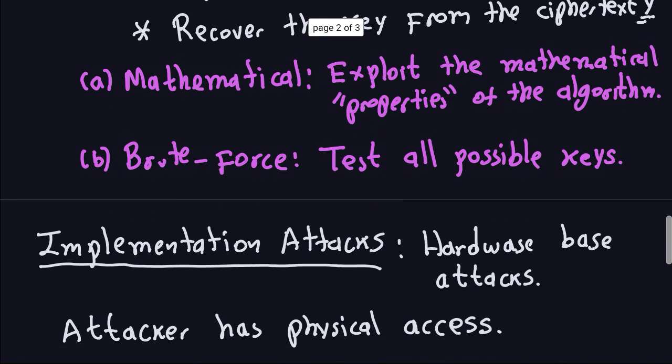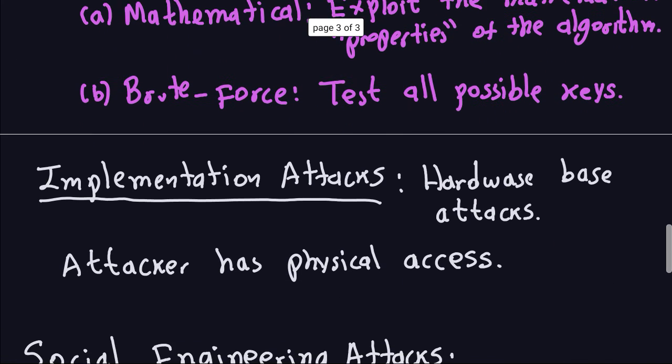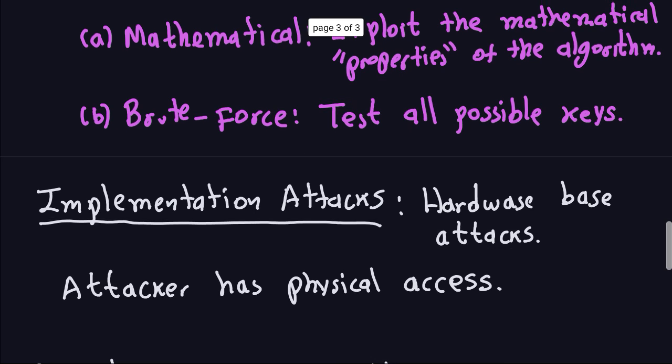Implementation attacks, as I mentioned briefly, are hardware-based attacks. You develop some hardware to break or recover the plaintext. In most cases the attacker will have to have some physical access to the machine — for example, your computer, your credit card, or debit card.